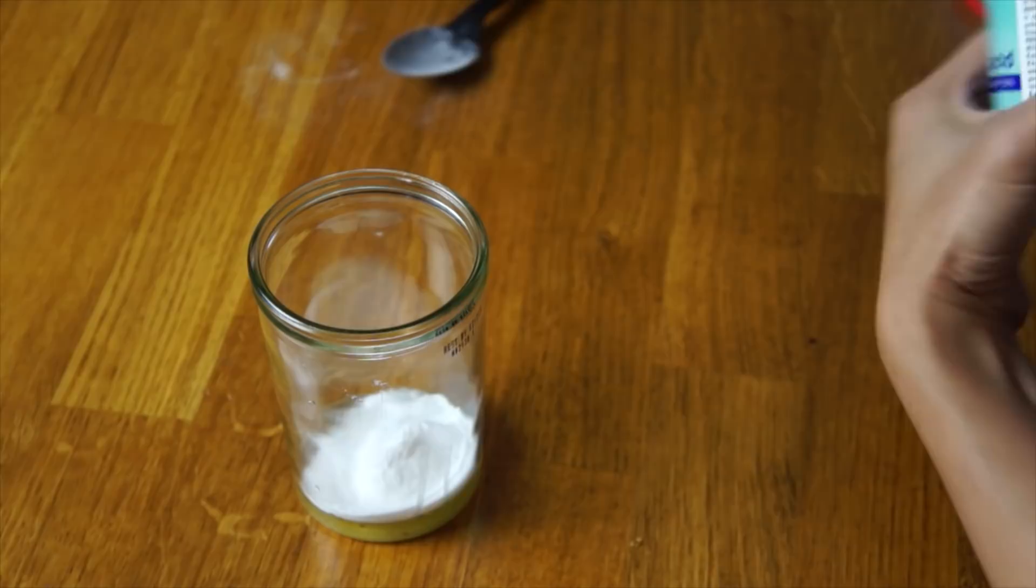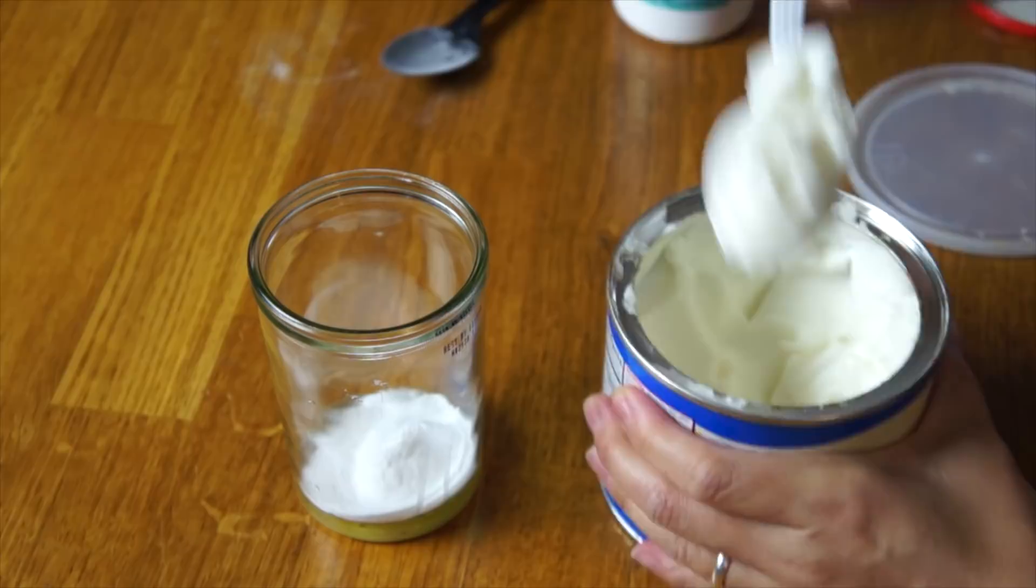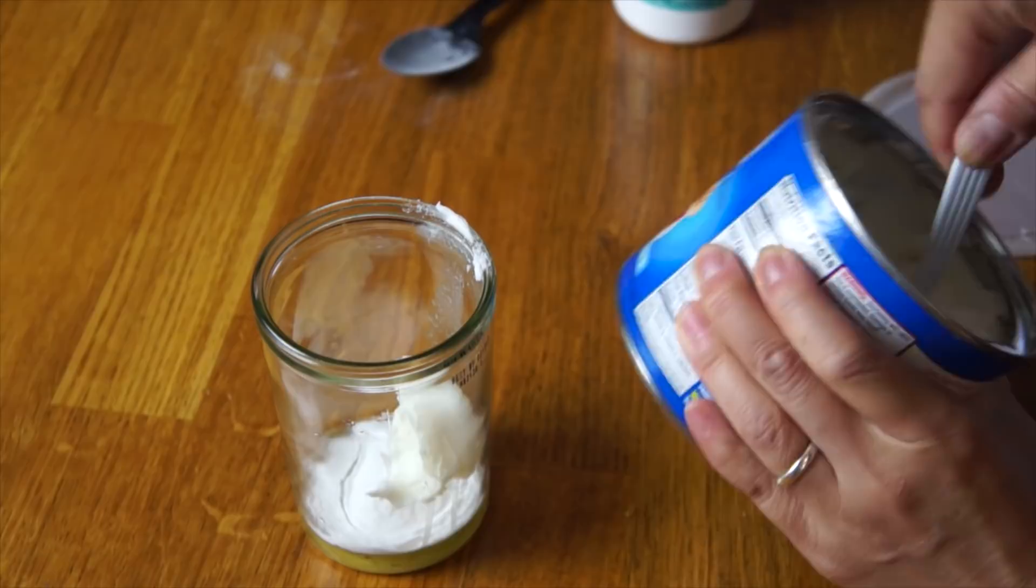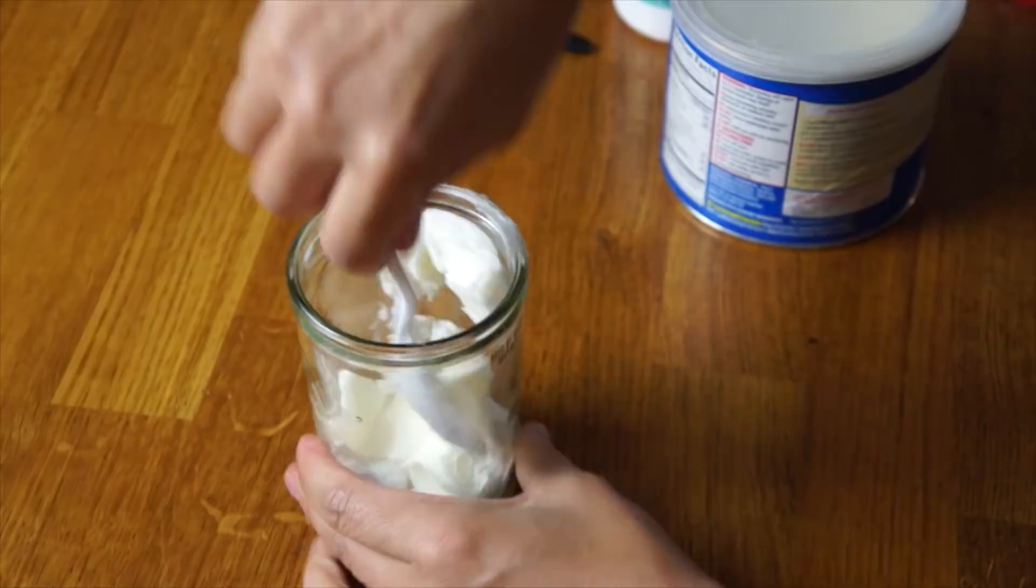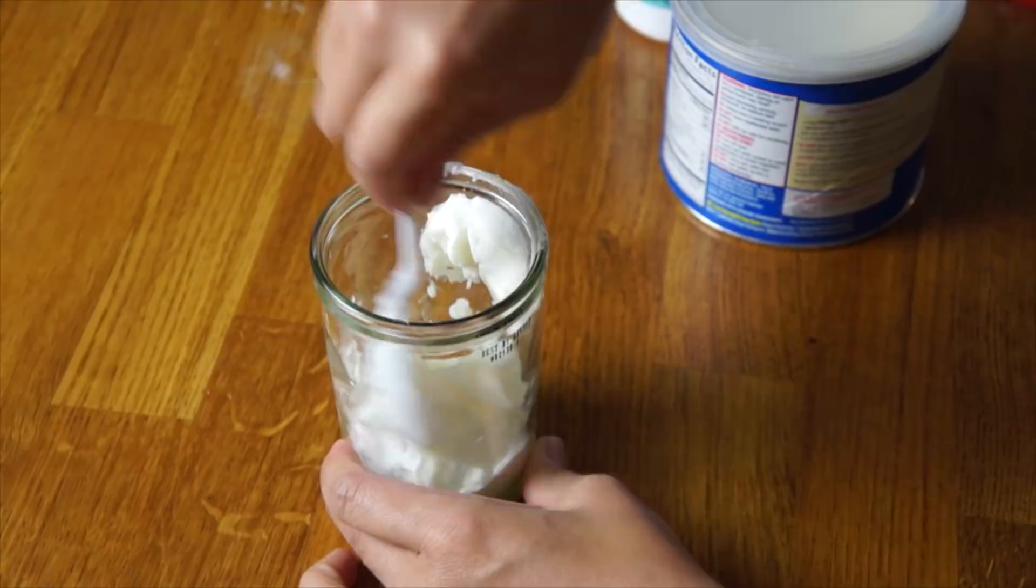Then we're going to use some shortening, some Crisco, about two tablespoons of that. Then just mix this really well. That's going to be our bait.